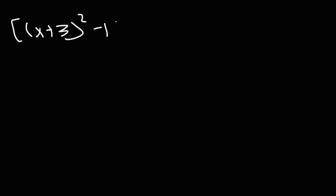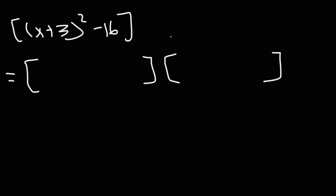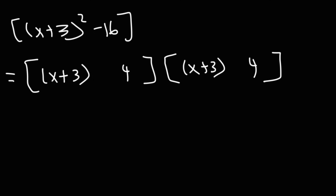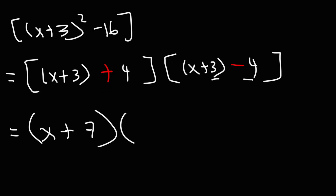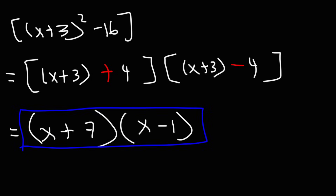Now try x plus 3 squared minus 16. The square root of x plus 3 squared is simply x plus 3, and the square root of 16 is 4. We're going to have a plus and a minus. Simplifying: x plus 3 plus 4 gives x plus 7, and x plus 3 minus 4 gives 3 minus 4 which is negative 1, so x minus 1. The final answer is x plus 7 times x minus 1.